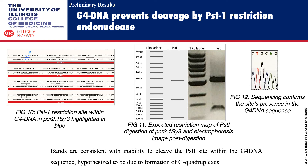Our preliminary data indicates that G4 DNA prevents cleavage by PstI restriction endonuclease. As shown in figure 10, highlighted in blue is the PstI restriction site within the G4 DNA sequence in the PCR 2.1 Sgamma3 plasmid. Figure 11 shows the expected restriction map of PstI digestion of PCR 2.1 Sgamma3 and the electrophoresis image post-digestion. Two of the bands expected at 1.2 kb and 500 bp are missing. Sequencing later confirms the site's presence in the G4 DNA sequence, as shown in figure 12. The bands produced are consistent with the inability to cleave the PstI site within the G4 DNA sequence, which is hypothesized to be due to the formation of G-quadruplexes.